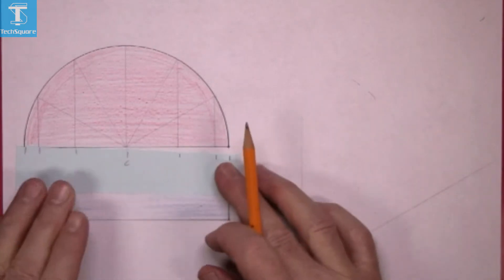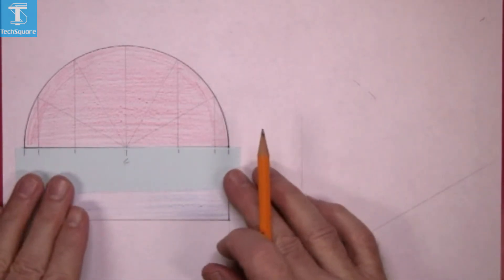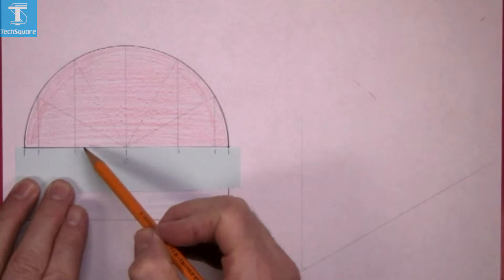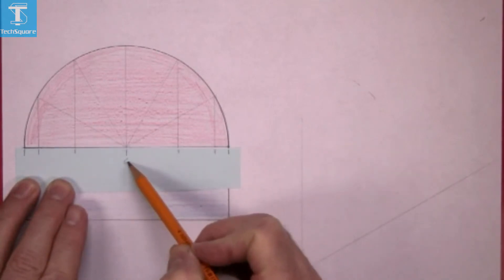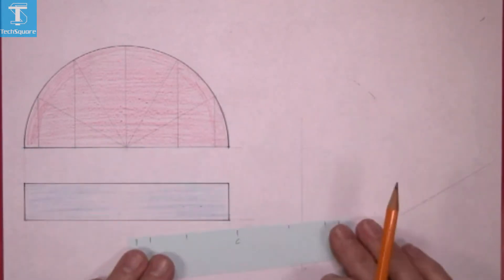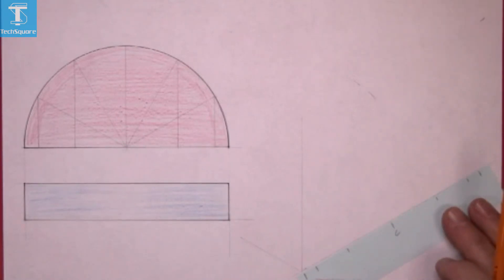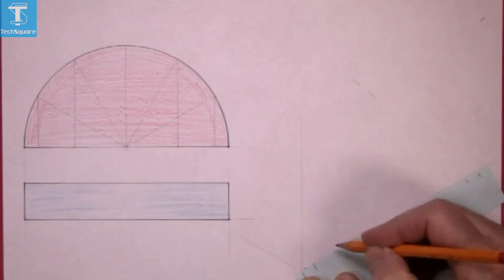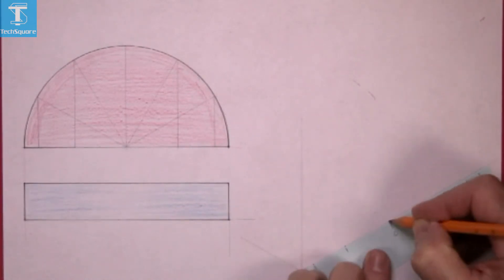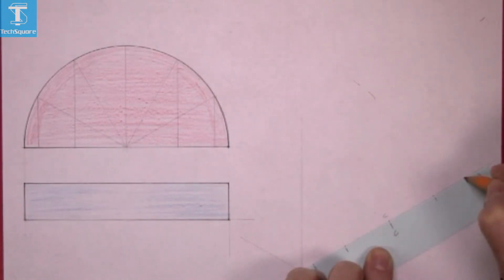So again, take a piece of paper and mark the positions of these lines and this centre point there, and transfer the points now onto the drawing. Mark your centre point there and then draw vertical lines through those points.